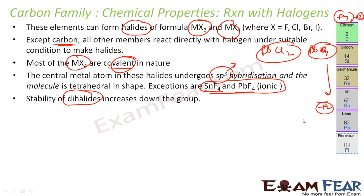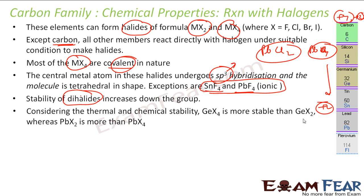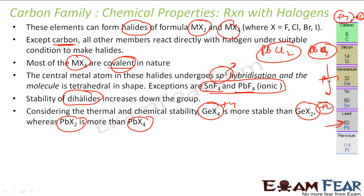For germanium, GeX4 is more stable than GeX2 because Ge +4 is more stable. But for lead, PbX2 is more stable than PbX4 because Pb +2 is more stable. So plus 4 is more stable for germanium, while plus 2 is more stable for lead.